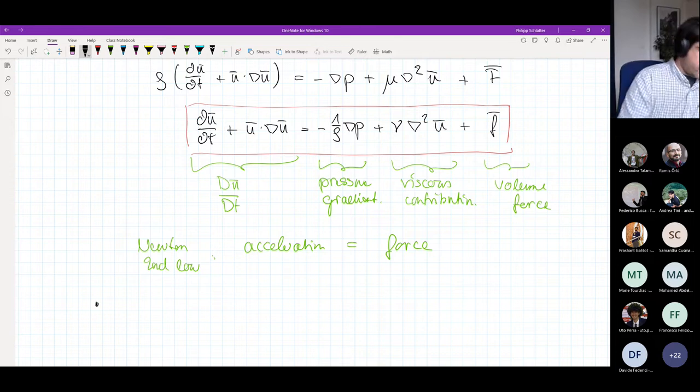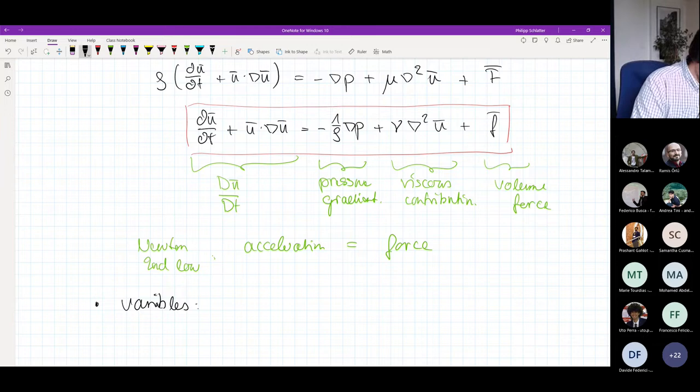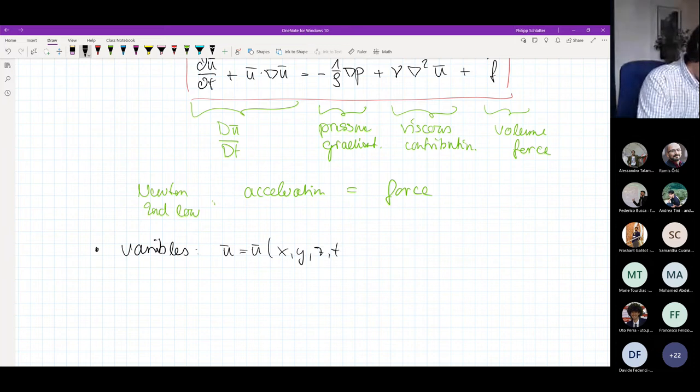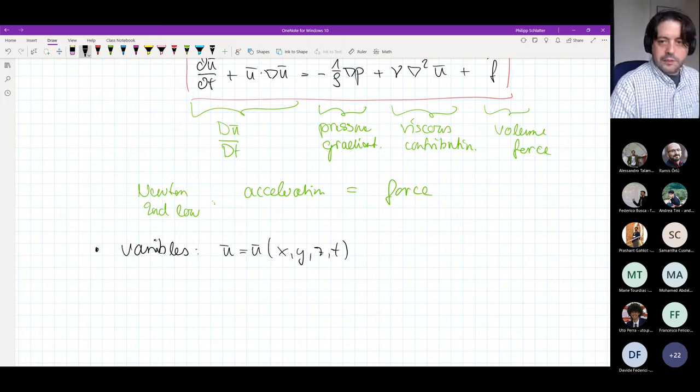Now we have talked about the actual equation. What are the variables that we need to calculate? We have the velocity u, which is a function of x, y, z, and time. All our flow variables are defined in space and in time.